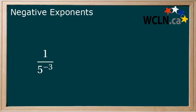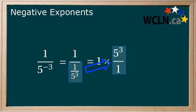So let's try that here. 1 over 5 to the power of negative 3. Now take the reciprocal of 5 to the power of negative 3 and we get 1 divided by 1 over 5 to the power of 3. We then flip this and multiply instead of dividing and you get 5 to the power of 3.